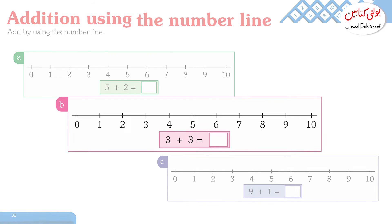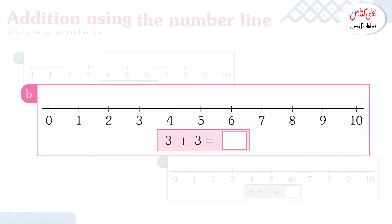Now we will move to the next question. On the number line, 3 plus 3 equals dash. We will move 3 hops from 0, and we have three hops total.